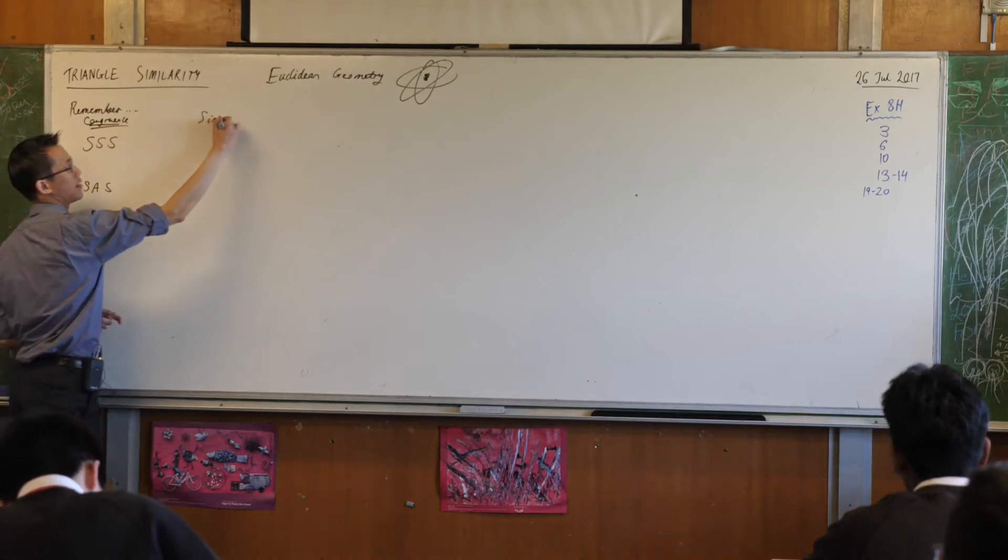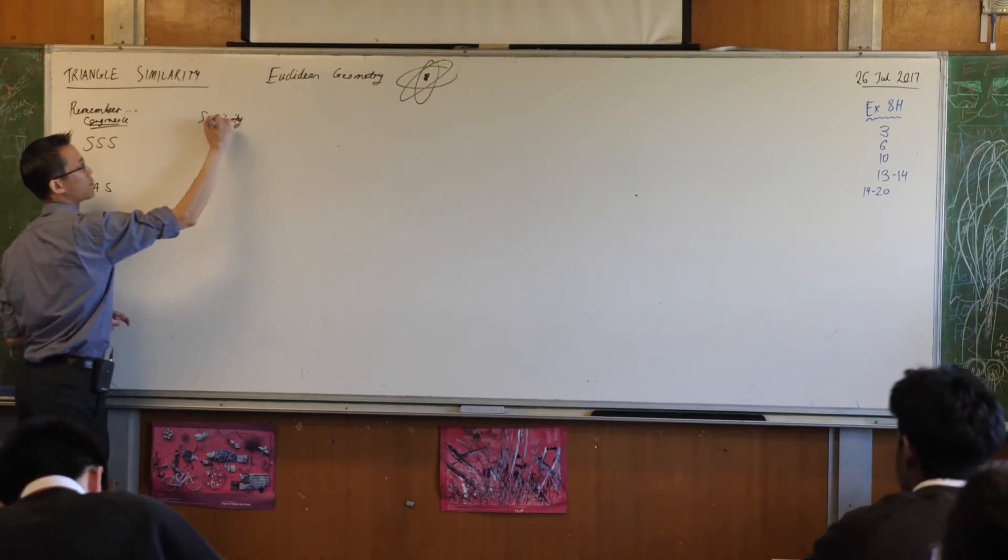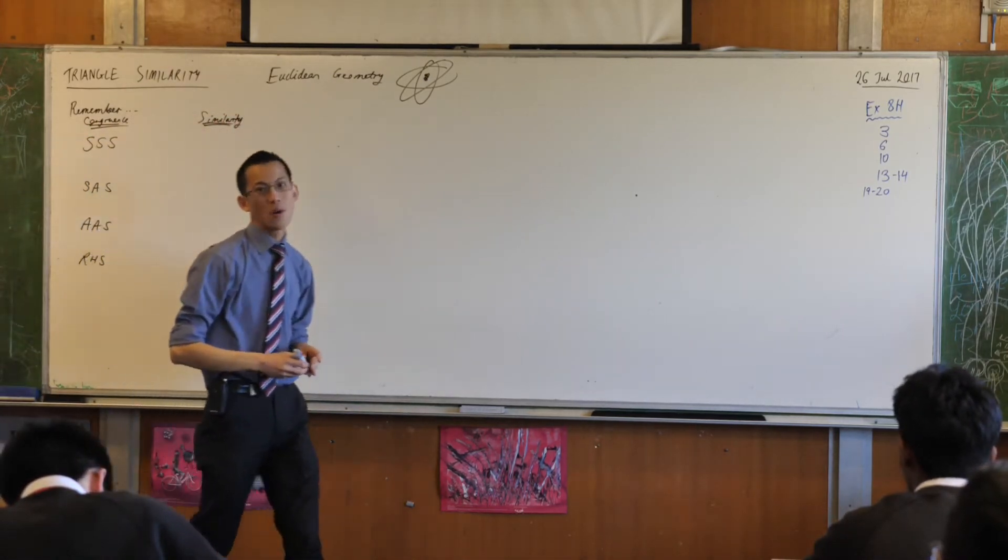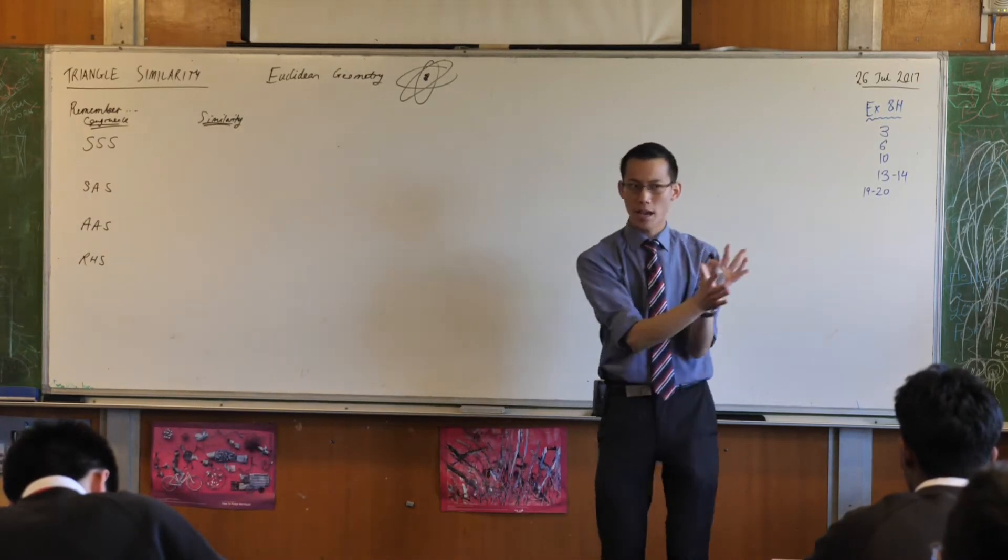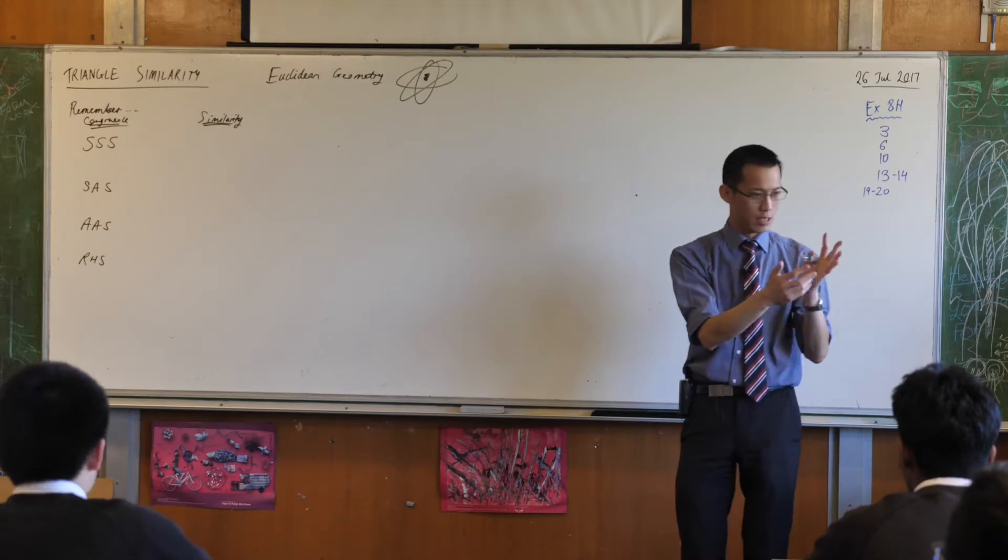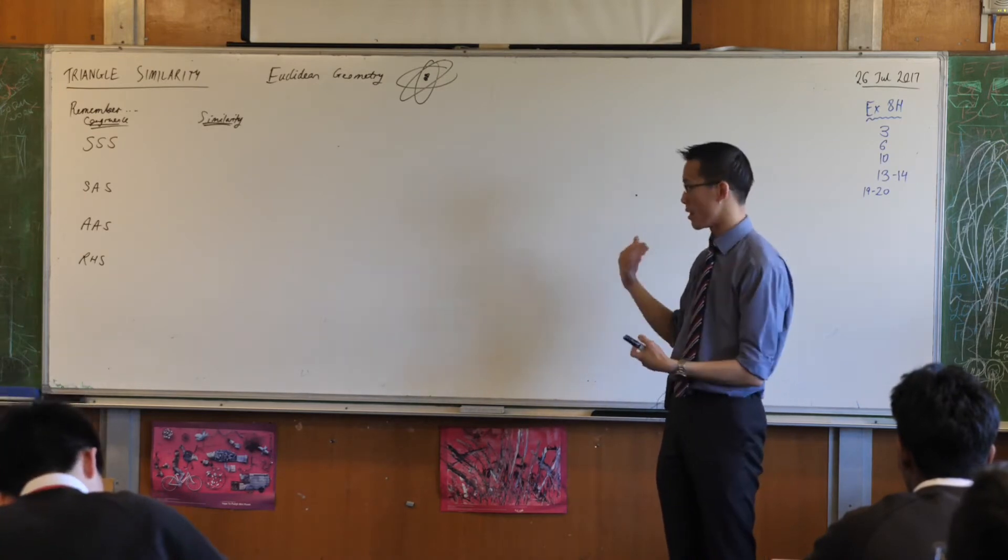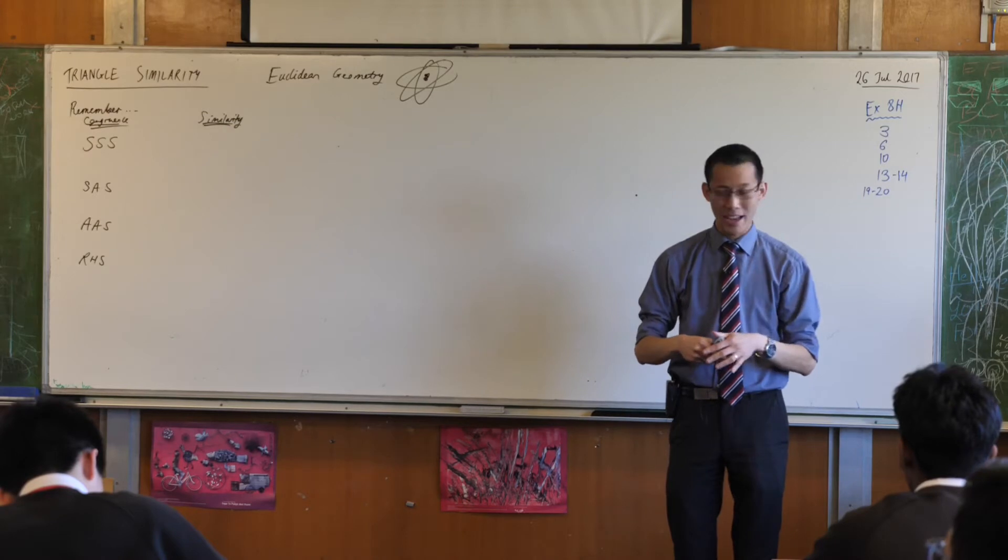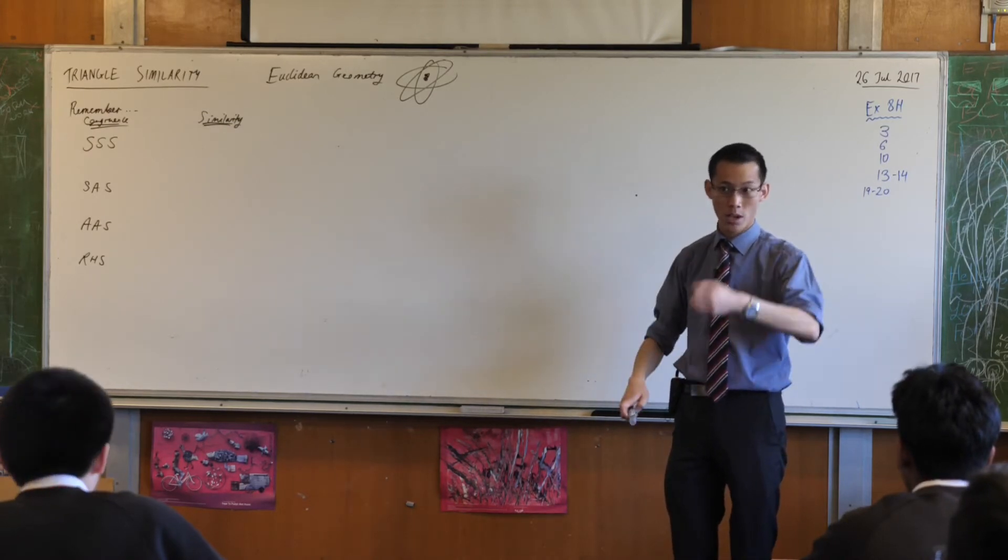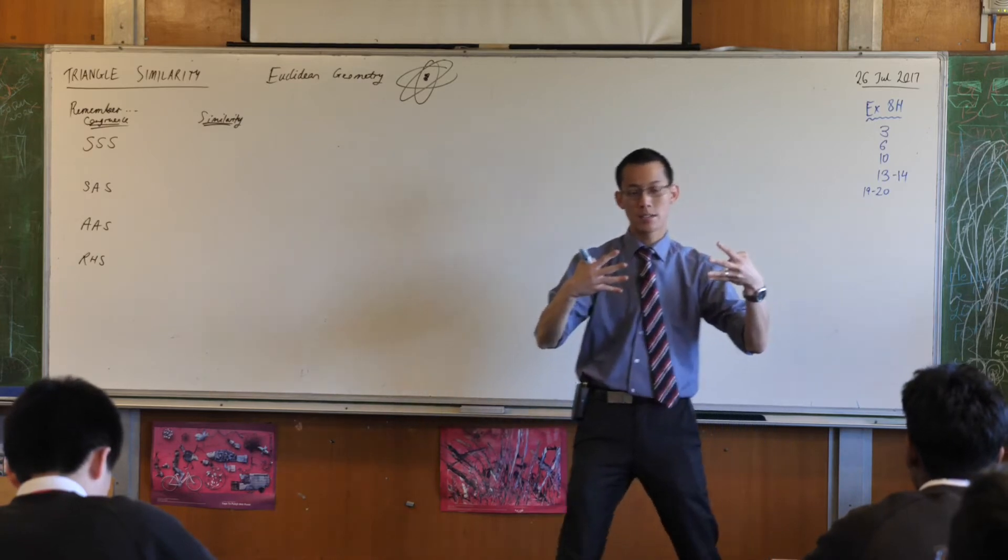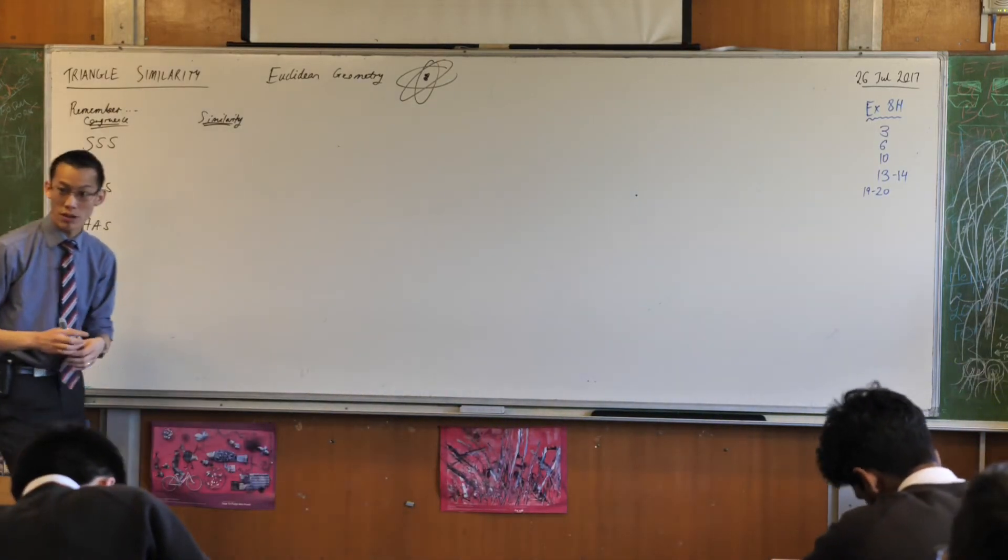But when it comes to similarity, we make you do words because they're not always the same. Angles are equal, but sides are not equal. Sides are in the same ratio or in proportion is the way that I tend to write it. There are tests for similarity that directly correspond to the tests for congruence. Four tests for congruence, four tests for similarity. So let's go through each of them.